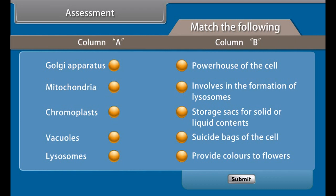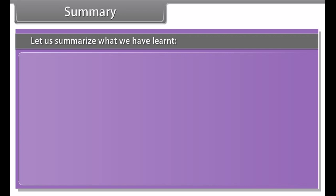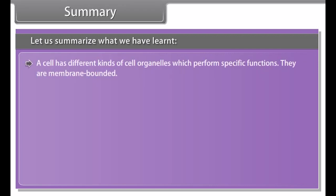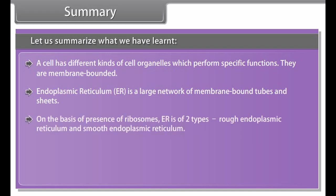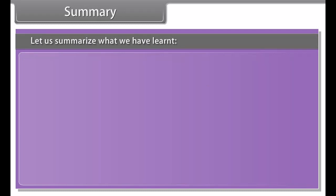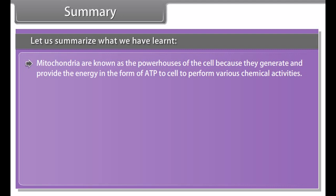Vacuoles are storage sacks for solid or liquid contents. In animal cells, the size of vacuoles is small, while plant cells have very large vacuoles. The central vacuole of some plant cells may occupy 50–90% of the cell volume. In plant cells, vacuoles are full of cell sap and provide turgidity and rigidity to the cell. Many important substances for life are stored in vacuoles, including amino acids, sugars, various organic acids and some proteins. In unicellular organisms like amoeba, the food vacuole contains consumed food items, and specialized vacuoles also play important roles in expelling excess water and wastes from the cell.